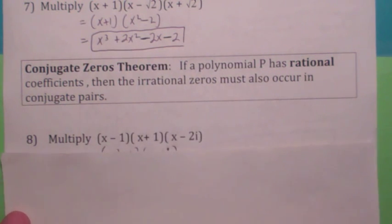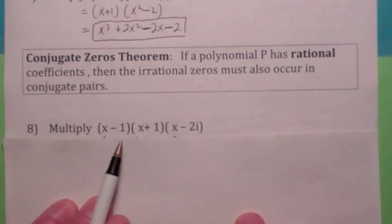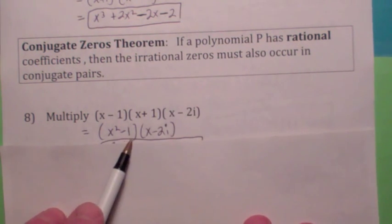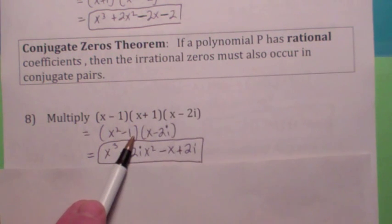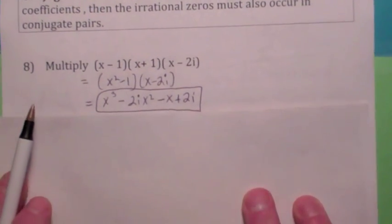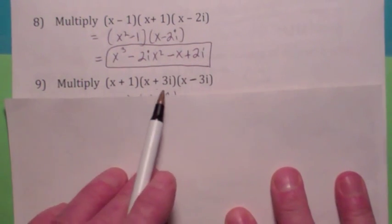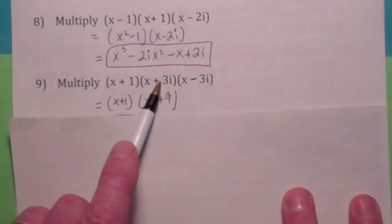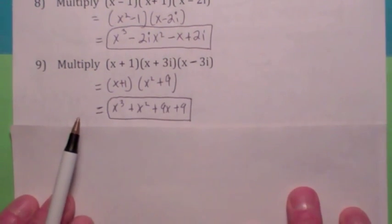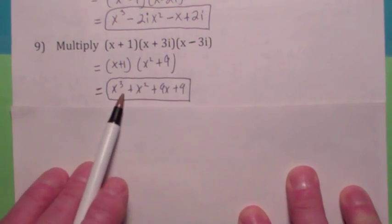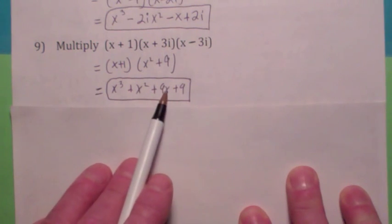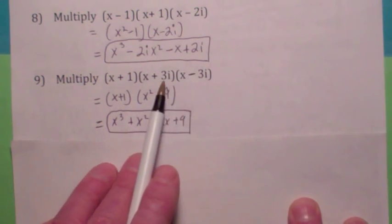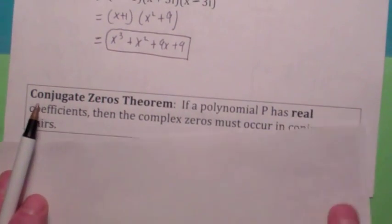And the same thing is true with nonreal zeros. If you were to multiply this out, are you going to have any i's in your final answer? The answer is yes — when you multiply the first two together, you get x squared minus 1, so using the FOIL method, you are definitely going to have i's in your final answer. But when you multiply conjugate factors, the answer is no, because whenever you have the conjugate, when you multiply these two together, you get x squared plus 9. So, if you have any complex zeros of a polynomial that has real coefficients, the only way that can happen is if the complex zeros occur in conjugate pairs. That's what the conjugate zeros theorem says.